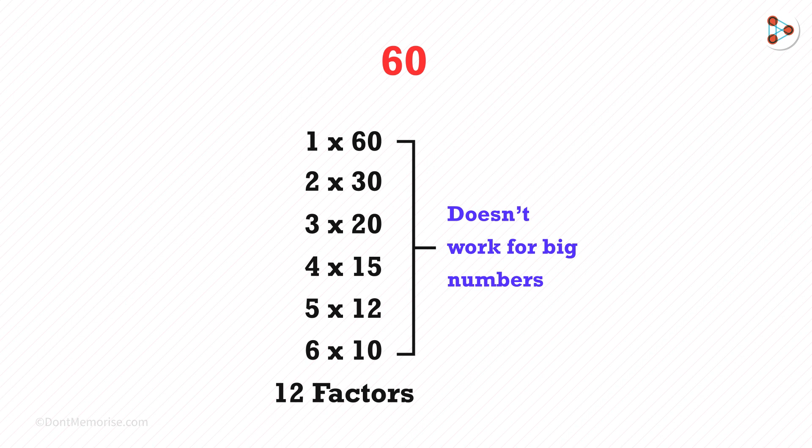So is there an easy method to find the total number of factors? For that we have to write 60 in the form of prime factorization. 60 is 2 squared multiplied by 3 multiplied by 5.